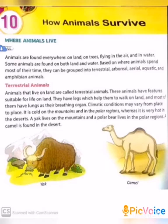First, we are going to see terrestrial animals. Animals that live on land are called terrestrial animals. Their bodies are suited to living on land. They have legs which help them to walk on land, and they breathe with the help of their lungs and other organs.